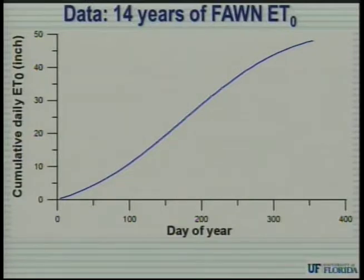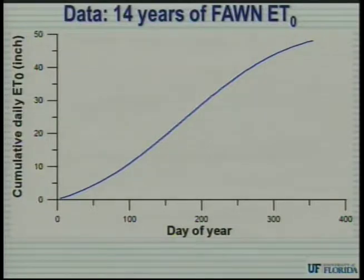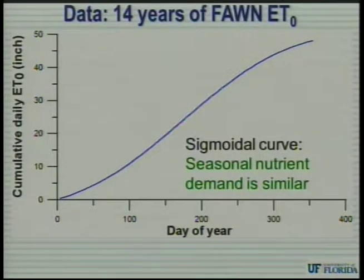I can only make this generalization for historical data — if you want to use actual daily ET from a weather station, that is absolutely not true. Calculating the cumulative evapotranspiration by adding each daily ET together makes a different curve — a double exponential, or sigmoidal, curve showing low ET in winter, going into very high ET in spring and summer, then diminishing into fall. This sigmoidal curve is a great model for seasonal nutrient demand, since water uptake and nutrient uptake are inextricably tied together.